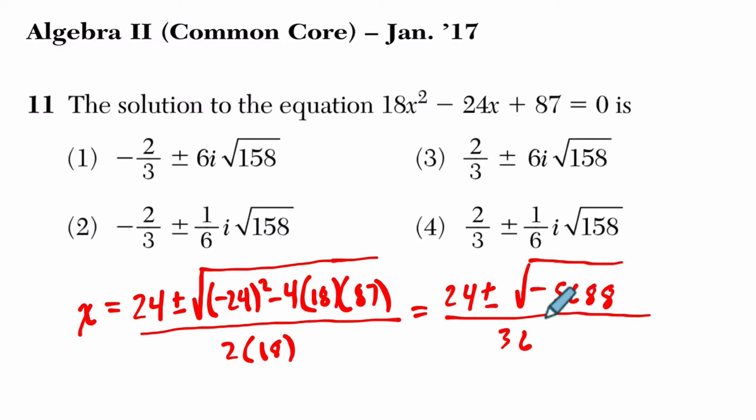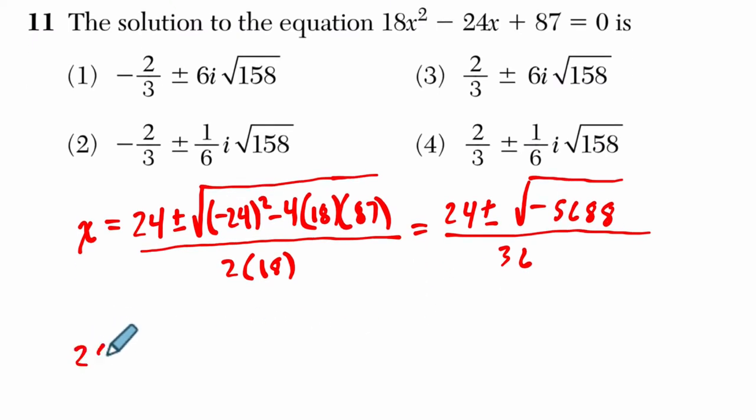And so that's an imaginary number. We're going to deal with that next. So we have 24 plus or minus i times the square root of 5688. All I did right there was say, this is equal to the square root of negative 1 times 5,688. And the square root of negative 1 is i.